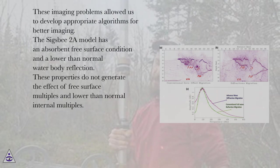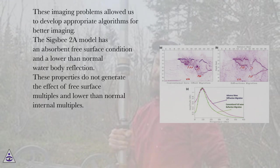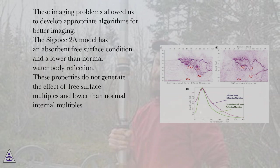These imaging problems allowed us to develop appropriate algorithms for better imaging. The SIGSB2A model has an absorbent free surface condition and a lower-than-normal water-body reflection. These properties do not generate the effect of free surface multiples and lower-than-normal internal multiples.